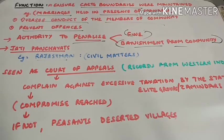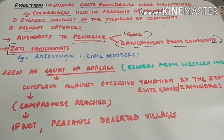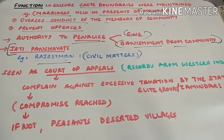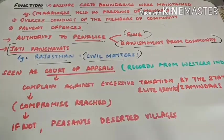There used to be jati panchayats as well, since caste played a very important role in rural society. Many castes had their own panchayats — caste-specific panchayats. For example, jati panchayats existed in Rajasthan and they tackled civil matters like questions relating to marriage and property. Their decisions in civil matters were even accepted by the courts. However, in criminal cases, the courts functioning under state authority had the binding authority.